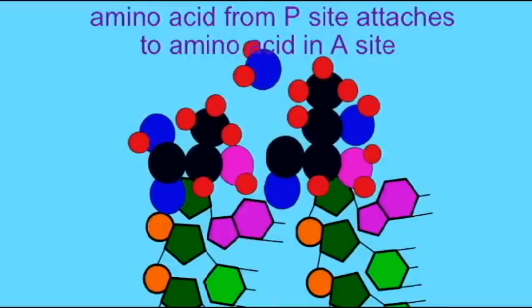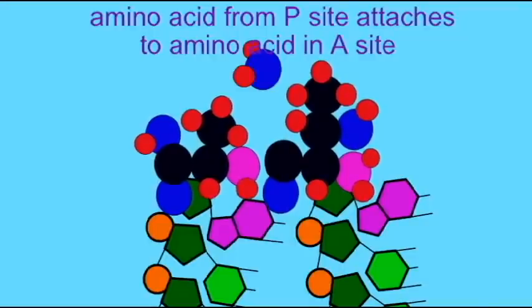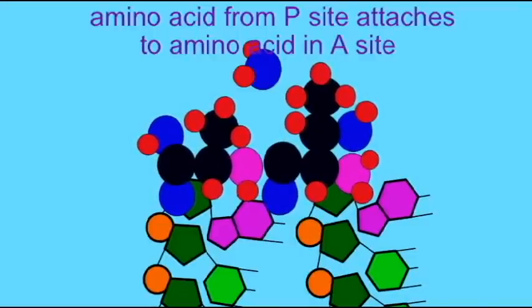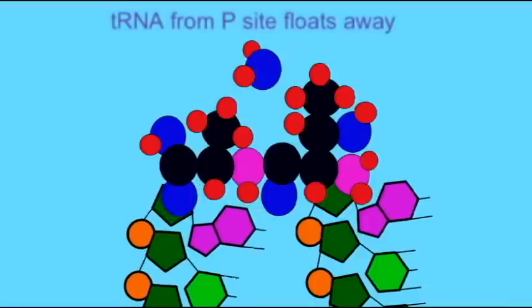The tRNA from the P site no longer has an amino acid attached, so it disassociates from the ribosome and will float away. It can then be charged with a new amino acid.